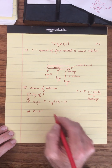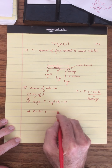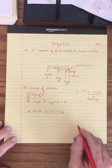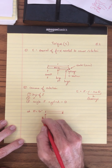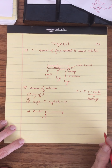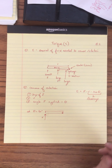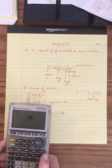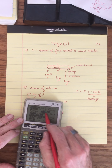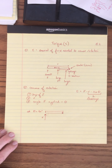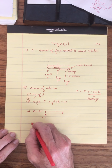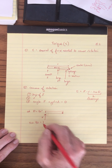When theta equals 90 degrees — here's the door, here's the hinge — we're applying a force at a 90-degree angle, perpendicular. Make sure your calculator mode is in degrees. If I plug in 90 and take the sine of 90, the sine of 90 is equal to 1. So the sine of 90 degrees equals 1.